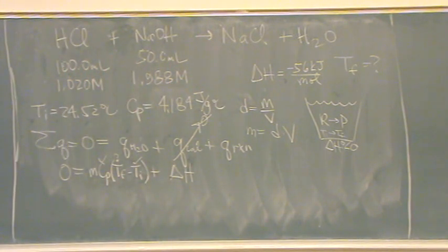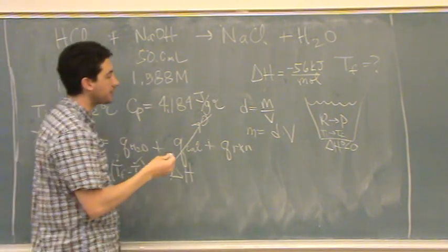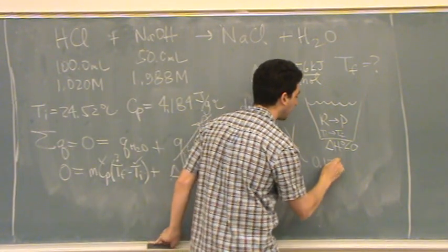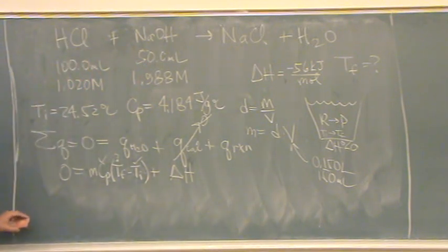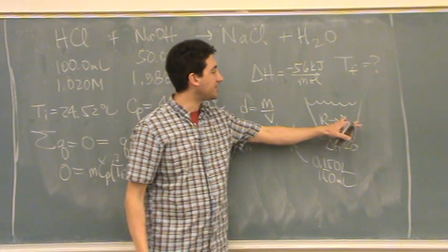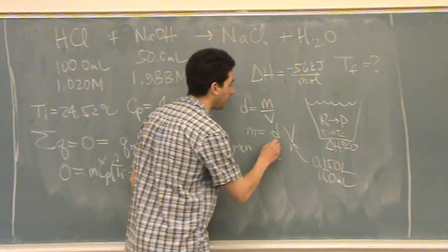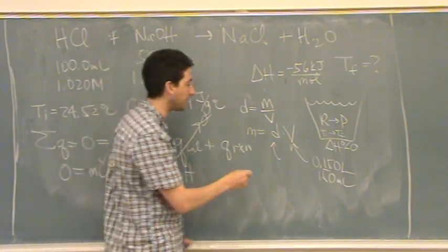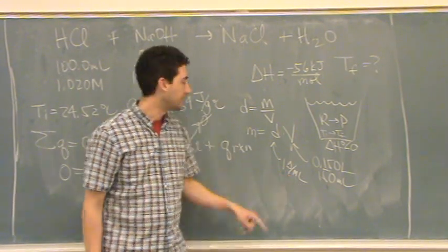What's my volume? It's the sum of these two things: 100 plus 50 is 150 milliliters. What's the density? One — one gram per milliliter. We're assuming the density of this solution is similar to water, which is fine for an average aqueous liquid. It's given on the back of your test and in your book. So, one gram per milliliter times 150 milliliters gives us 150 grams.